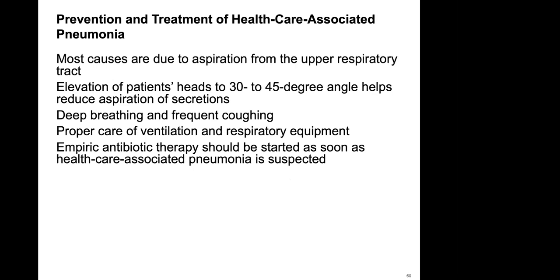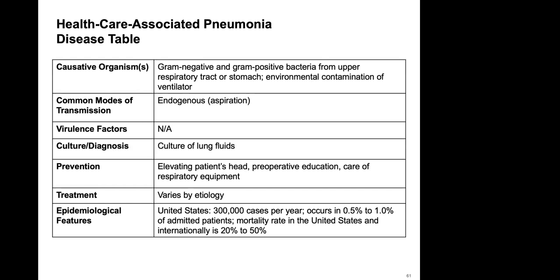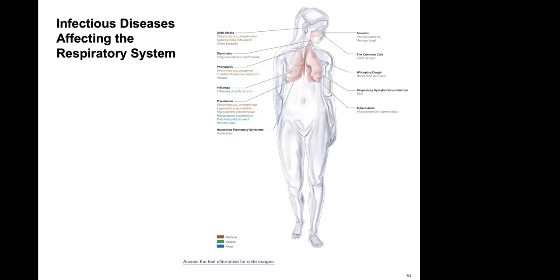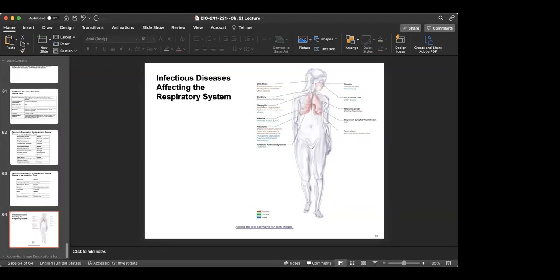Prevention and treatment of healthcare-associated pneumonia: most cases are due to aspiration from the upper respiratory tract. Elevating the patient's head to 30 to 45 degrees reduces aspiration of secretions, and deep breathing and frequent coughing help. Proper care of ventilation and respiratory equipment is essential, and empiric antibiotic therapy should be started as soon as healthcare-associated pneumonia is suspected. The final slides summarize all organisms that can cause respiratory tract infections.